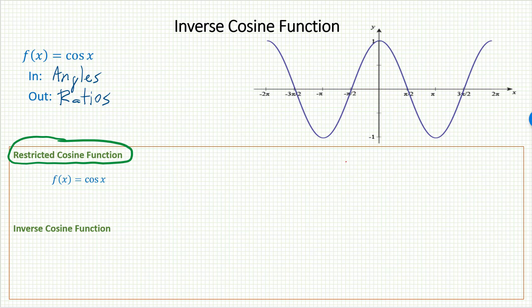We want to take the largest section we can that still passes, and that section is the section from 0 down to π. That green section of the cosine function is called the restricted cosine function. f(x) equals cos x, but only angles between 0 and π. That function, the restricted cosine function, has an inverse function.